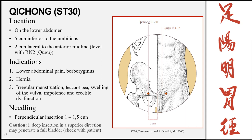Qichong, Stomach 30, is on the lower abdomen, 5 cun inferior to the umbilicus and 2 cun lateral to the midline, level with the upper border of the pubic symphysis. Indications include lower abdominal pain, borborygmus, hernias, and male or female reproductive problems such as irregular menstruation, leukorrhea, swelling of the vulva, impotence, or erectile dysfunction. Insertion is perpendicular, 1 to 1.5 cun, with caution against deep insertions in a superior direction, as the bladder lies superior to this point.